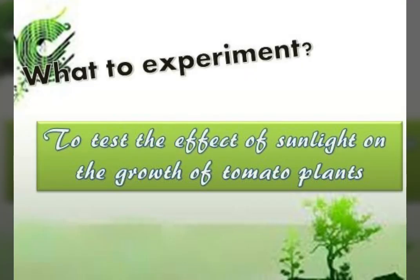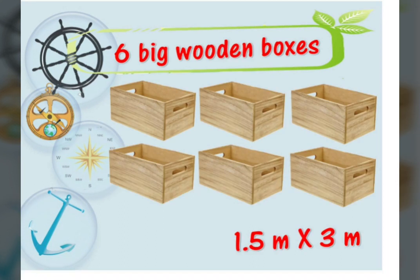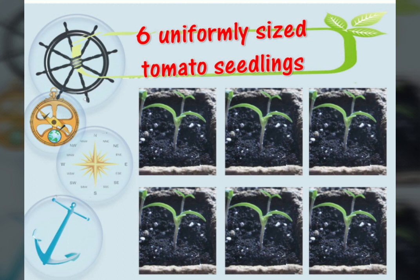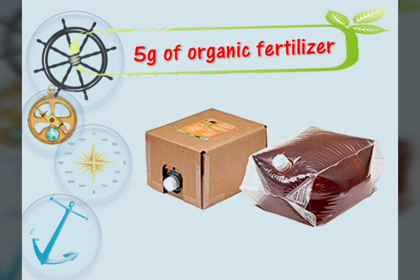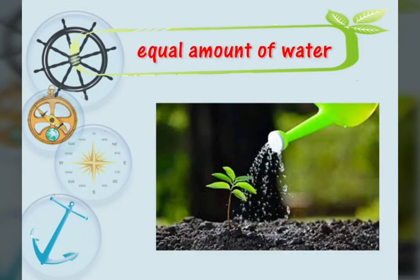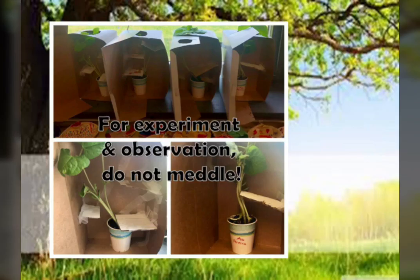As a researcher, you're going to perform an experiment. Julia wants to test the effect of sunlight on the growth of tomato plants. She prepared six big wooden boxes measuring 1.5 meters by 3 meters and placed an equal amount of 1 kilogram of loam soil. From the nursery, she picked six uniformly sized tomato seedlings for planting in the boxes. She treated all planted tomatoes with 5 grams of organic fertilizer, then separated the six boxes into two groups — three boxes placed inside a cabinet without sunlight. To prevent the setups placed outside from being affected by other variables like human urine and rain, Julia labeled the setups for experiment and observation.